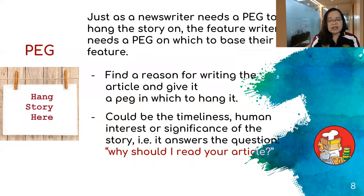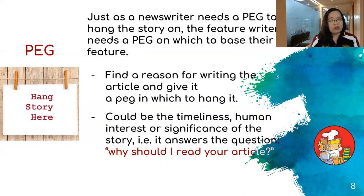The peg could be the timeliness of the story — that it has to be read because it's happening, it's an issue that is so hyped up. It could be because it's very heartwarming or significant. You have to tell your readers the answer to this question: why should I read your article? That is the peg of a feature story.